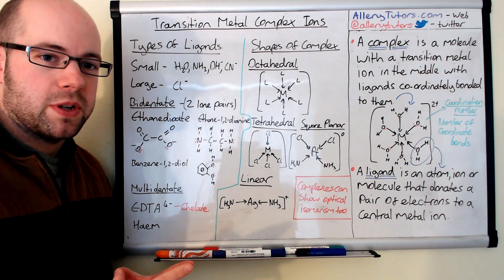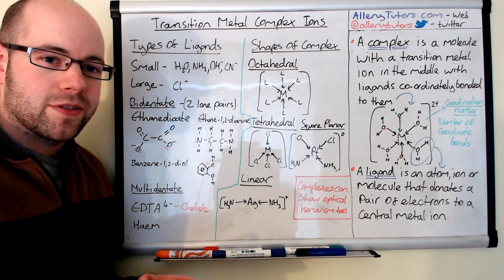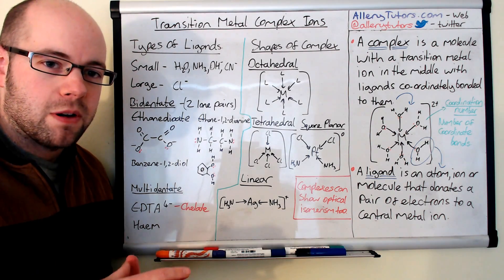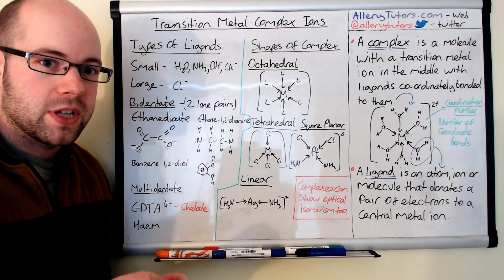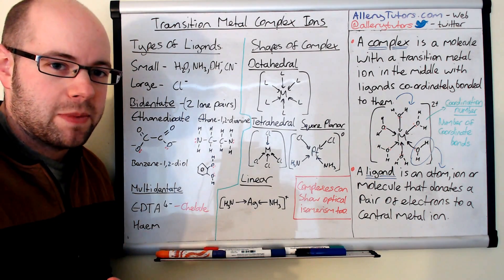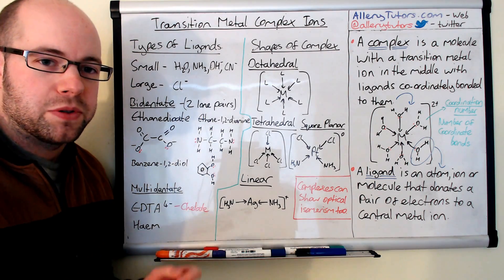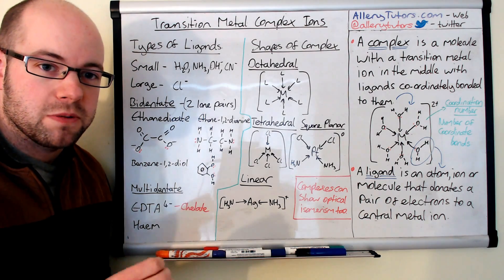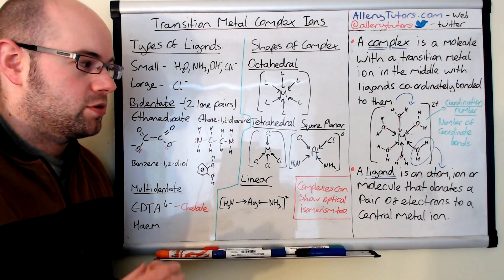The other key term is the coordination number. The coordination number tells us the number of coordinate bonds that surround our metal ion in the middle. You have to be careful not to confuse this with the number of ligands, because some ligands can actually bond twice. So the coordination number is the number of coordinate bonds surrounding the metal ion.